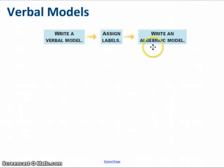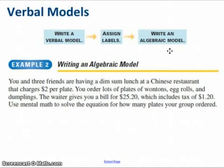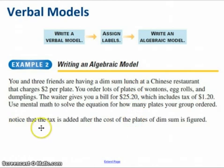And then you turn that into an algebraic model. So for example, and this is obviously taken straight from the textbook, they have this story about you buying plates of food at a dim sum lunch at a Chinese restaurant. And one of the things they point out that I think is kind of nice of them, they don't always, is they point out the tax is added.